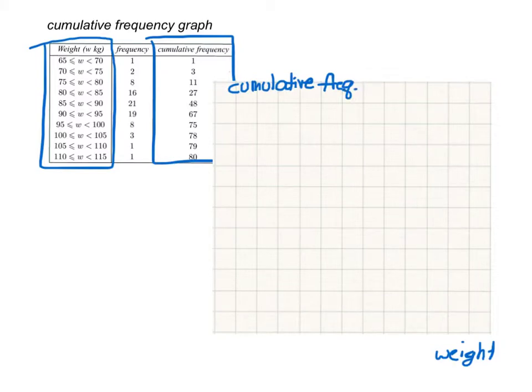And the values we're going to use on the x-axis come from the weight column in the cumulative frequency table. And I'm going to start with the left-hand value on the first class interval, which in this case is 65. And 65 is going to go here. And then I'll have 70, and I'm going to skip a few numbers here. 80, 90, and so on and so forth. On the vertical axis, I need to be able to go from 0 all the way up to 80. So I need to spread out my axis accordingly, and I can label it like so.